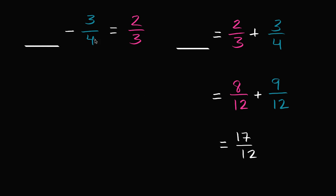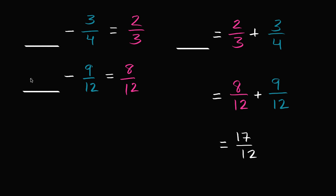So we get 17/12 minus 3/4 is equal to 2/3. Another way you could have done it is to rewrite the original equation with fractions having a common denominator of 12. We'd rewrite 3/4 as 9/12 and 2/3 as 8/12. Then: blank twelfths minus 9/12 is equal to 8/12. If I have blank of something minus 9 of that something and I'm left with 8, then I had 17 to begin with. 17/12 minus 9/12 equals 8/12. Either way, you get 17/12 for the blank.